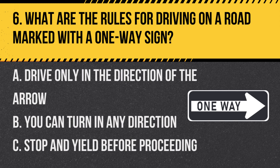Question 6: What are the rules for driving on a road marked with a one-way sign? A. Drive only in the direction of the arrow. B. You can turn in any direction. C. Stop and yield before proceeding. Answer: A. Drive only in the direction of the arrow. A one-way sign indicates that you must drive only in the direction the sign's arrow is pointing.